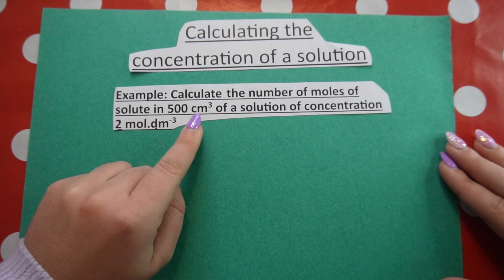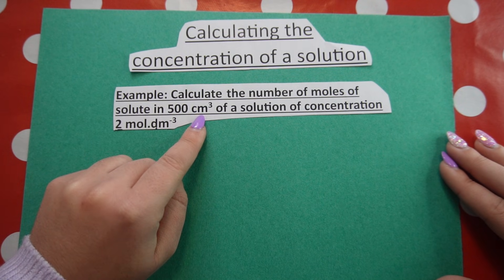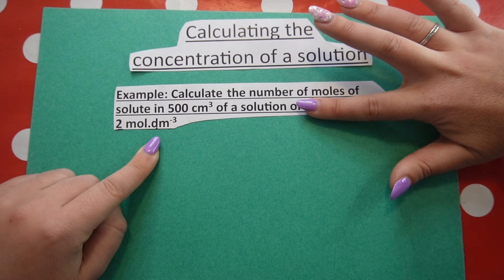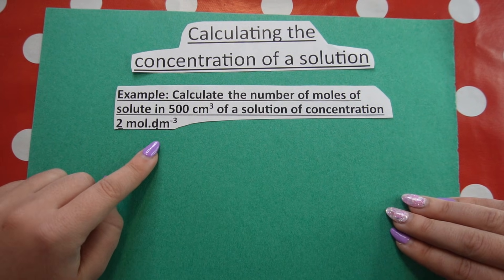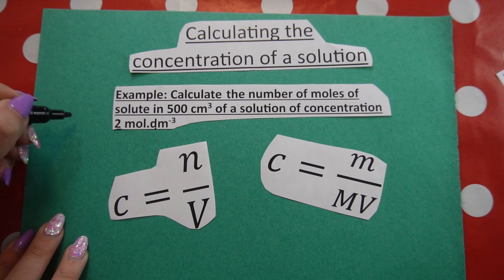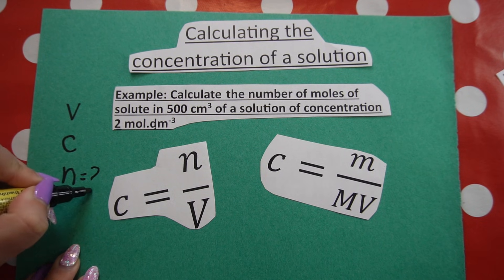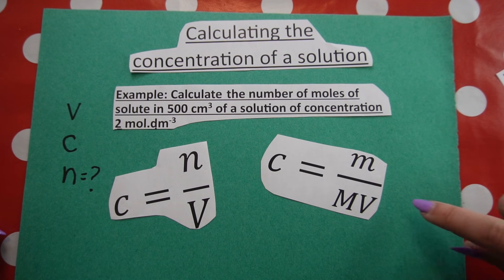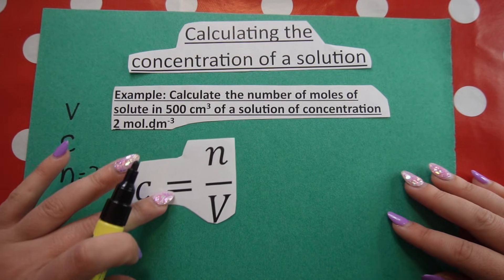The first thing to note is that the question doesn't explicitly say 'volume,' so you need to look at the units — cubic centimeters is a measure of volume. They tell me concentration is 2 moles per cubic decimeter, and even if the word 'concentration' isn't there, you rely on the units to recognize it. Which formula to use depends on the given information. I'm given volume and concentration, and I'm looking for number of moles. It doesn't make sense to use the formula with mass and molar mass — I don't know the mass, the molar mass, or even the compound — so that one is out of the question.